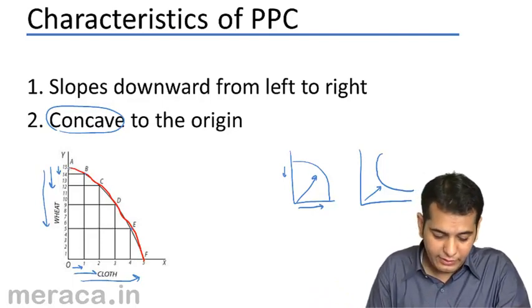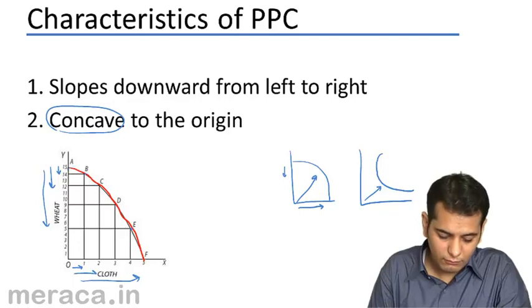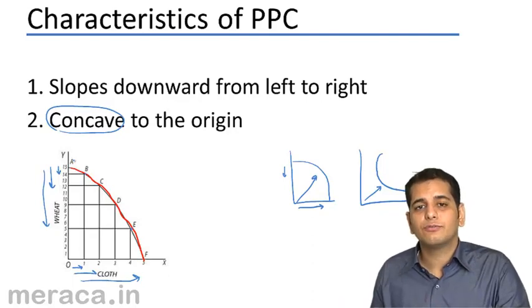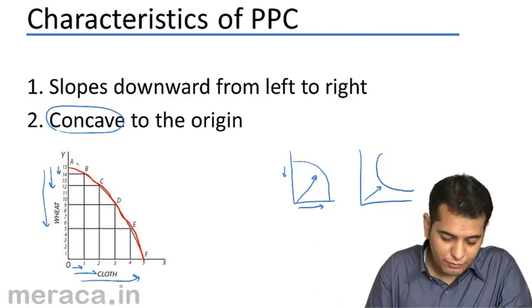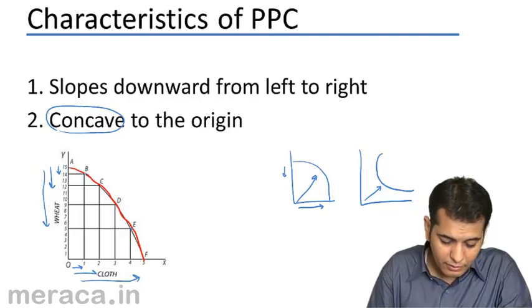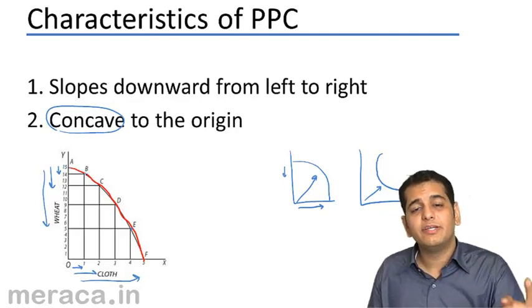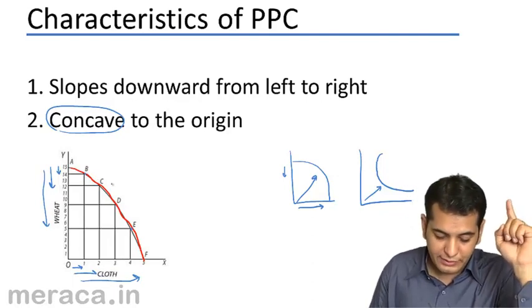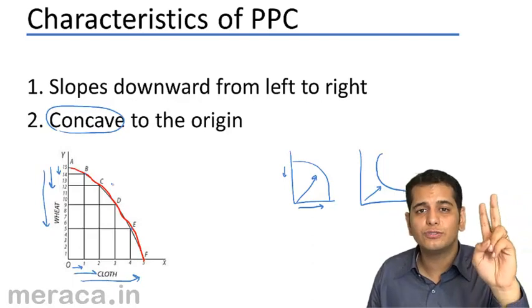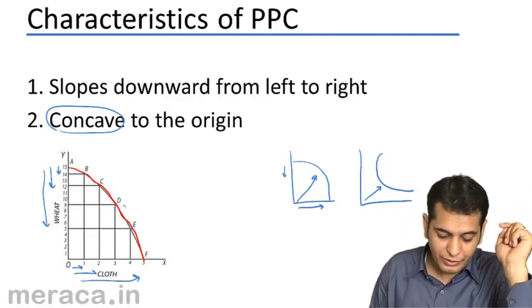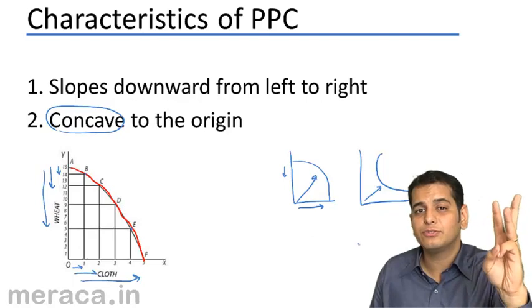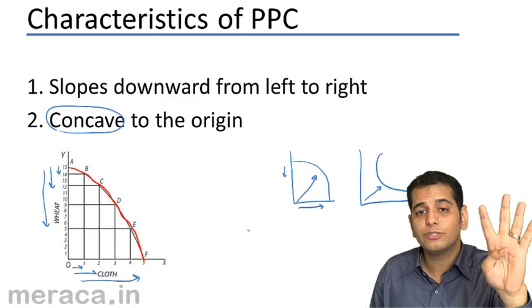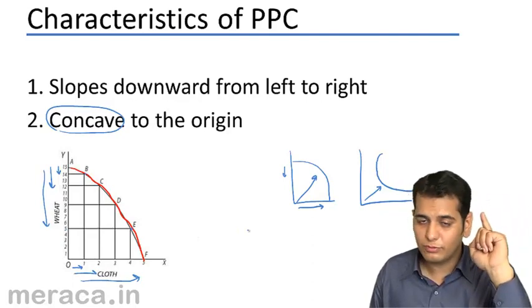So at point A here, we are not producing any units of cloth, but we are producing 15 units of wheat. But as we move to B, we are sacrificing 1 unit of wheat for 1 unit of cloth. At point C, we are further sacrificing 2 units of wheat for 1 unit of cloth. At point D, we are sacrificing 3 units of wheat for 1 unit of cloth. Similarly, we are sacrificing 4 units of wheat at point E for 1 unit of cloth.